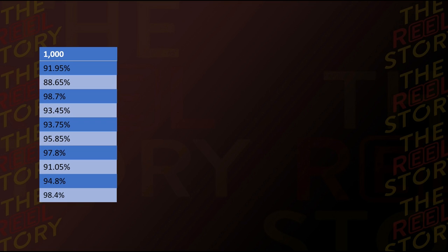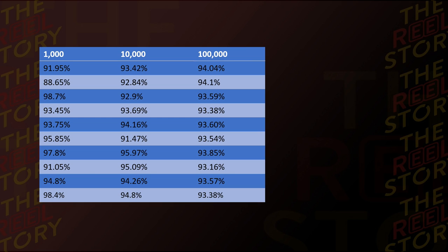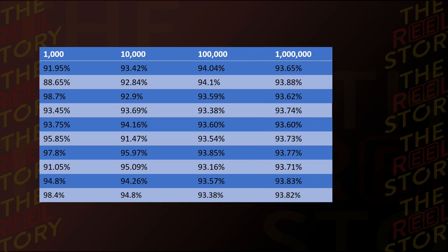Just to prove how many spins you need for any kind of accuracy, I've run a few more simulations with increasing numbers of spins. At 10,000 spins, run 10 times, there's still a pretty big variance — 91% at the lowest, 95% at the highest — that's a 4% difference, which is massive. Upping it to 100,000 spins, we're starting to get more accurate — most results are around 93% — but there are still a couple of 94% results, so we still have a 1% margin of error, which is significant.